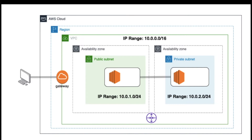This architecture requires one VPC. Within that we need to create two subnets — one is public and the other one is private subnet. In AWS cloud, in a single region we can create multiple VPCs, but we cannot span a single VPC to multiple regions. We have a region and inside this region we have one VPC. VPC is a logical isolated section of AWS cloud within a region. This is a private space and you have full control over how you can configure your VPC.